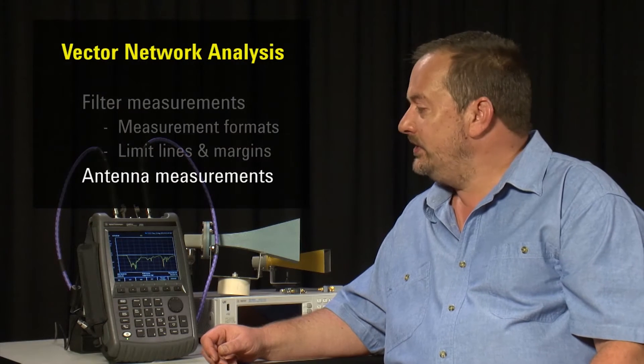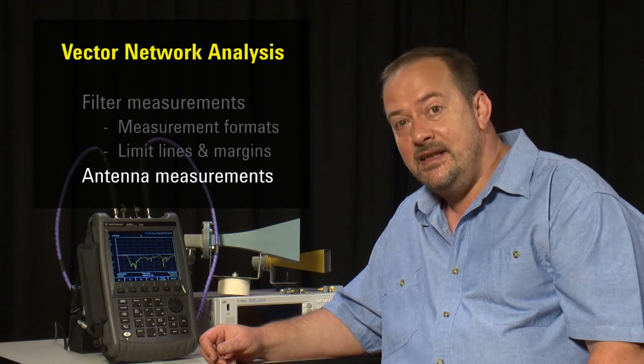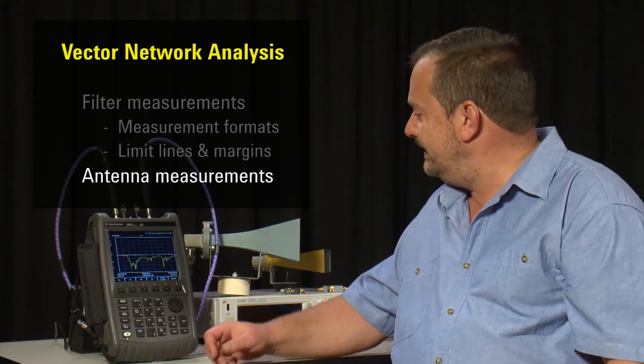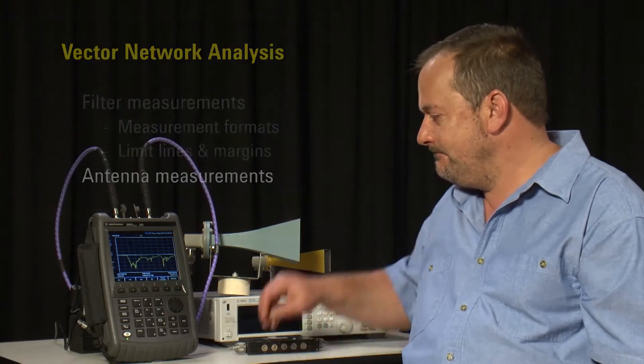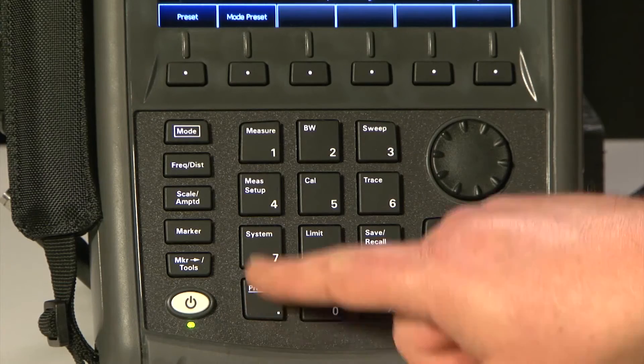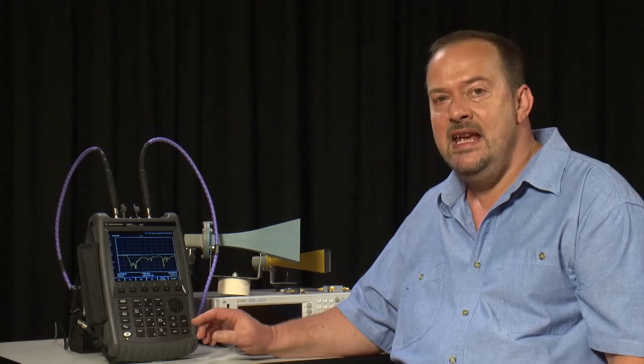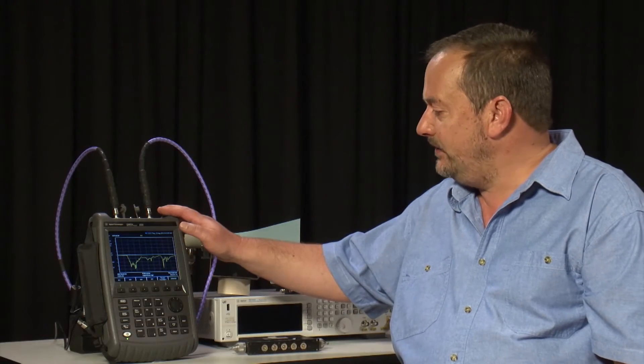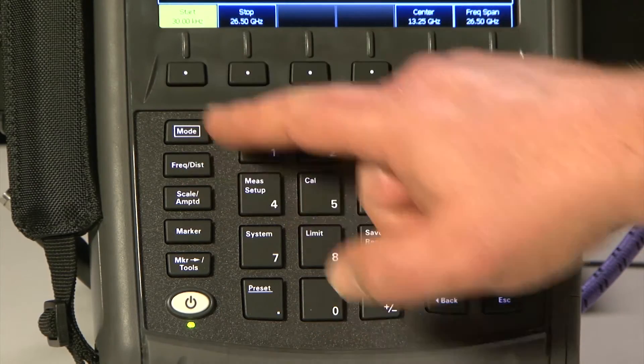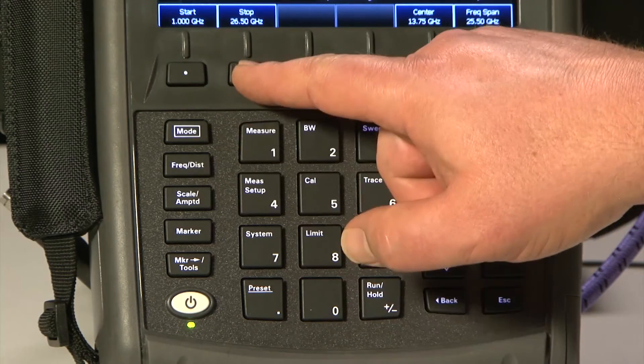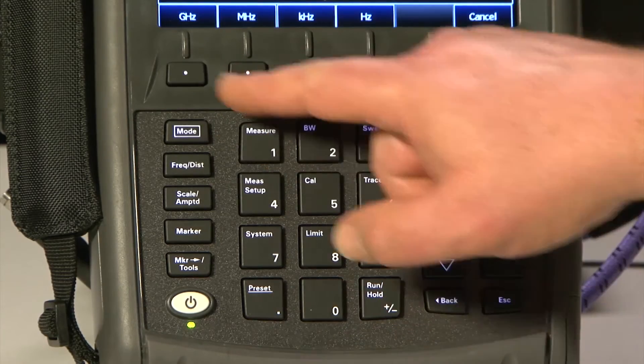In this example, I want to show you how quickly the FieldFox can be set up to make a quick measurement, in this instance, the return loss of this microwave horn antenna. I will press the Preset key and Mode preset. That puts the instrument back to its factory default state. We will set a frequency from, say, 1 GHz to 12 GHz.